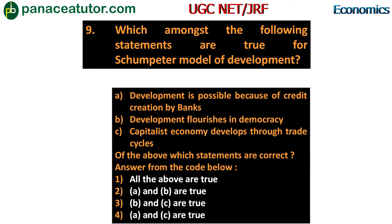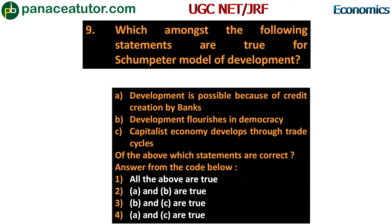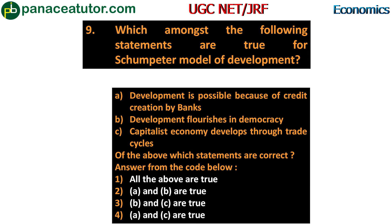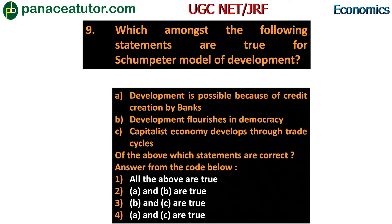Next question: which of the following statements are true for Schumpeter's model of development? Statement A - development is possible because of credit creation by banks; statement B - development flourishes in democracy; statement C - capitalist economy develops through trade cycles. Statement A is true - Schumpeter talked about bank credit in his model. Statement B is incorrect - Schumpeter said development flourishes in capitalist countries, not democracies. Statement C is also true. So the answer is option four - A and C are true, B is wrong.